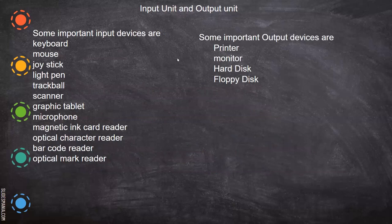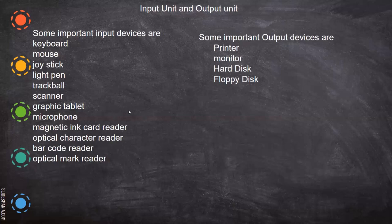Some of the input devices are: keyboard, mouse, joystick, light pen, trackball, scanner, graphic tablet, microphone, magnetic ink code reader, optical character reader, barcode reader, and optical mark reader. These all feed information to the computer, which is why they are called input devices. Some of the output devices are: printer, monitor, hard disk, floppy disk, etc.